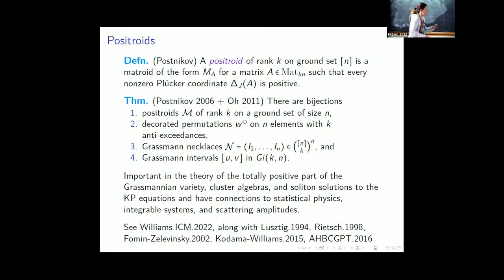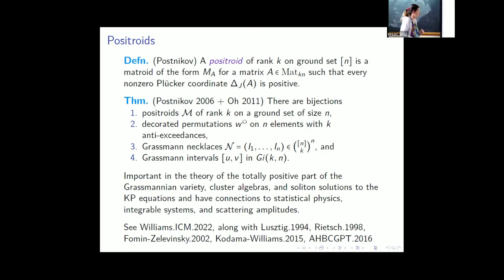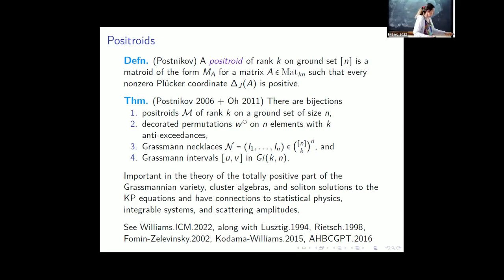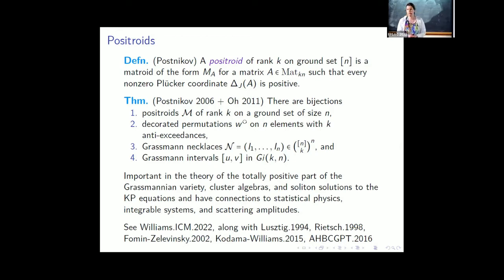These objects are very important in the theory of the totally positive part of the Grassmannian, cluster algebras, soliton solutions to the KP equations, and have nice connections with statistical physics, integrable systems, and scattering amplitudes. If you haven't seen this subject before, I recommend Lauren Williams' ICM talk as a good place to start. The big players include Lusztig's 1994 paper, Connie Rietsch's 1998 thesis, Fomin-Zelevinsky, Kodama-Williams, and Alex Postnikov.